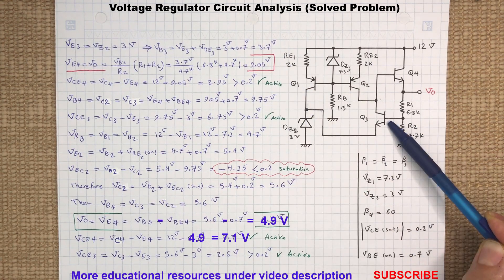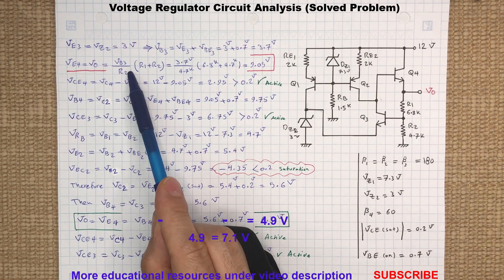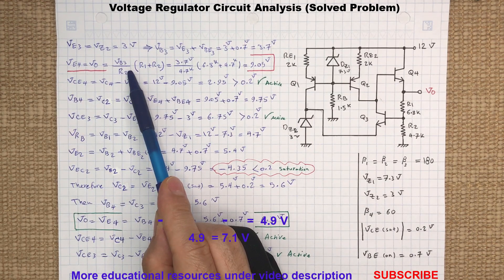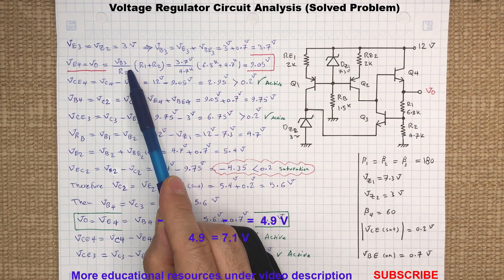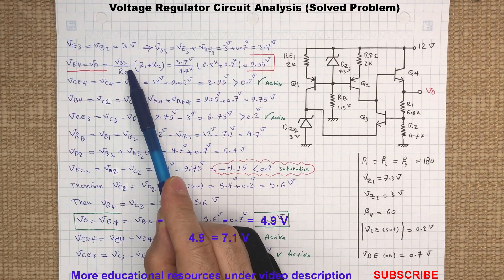Now by assuming a negligible base current for Q3, we can calculate the voltage at the output, which is the same as voltage at the emitter of Q4. So here VBE3 divided by R2 provides the current flow through R1 and R2, and multiplying by R1 plus R2 gives us the output voltage value.